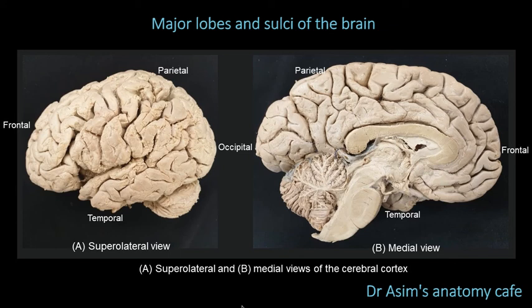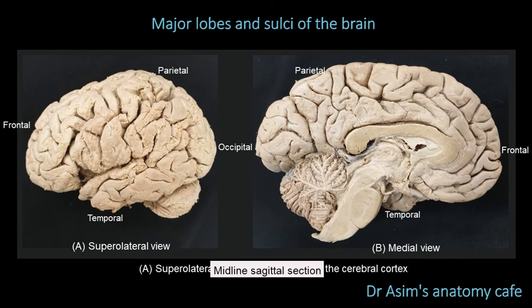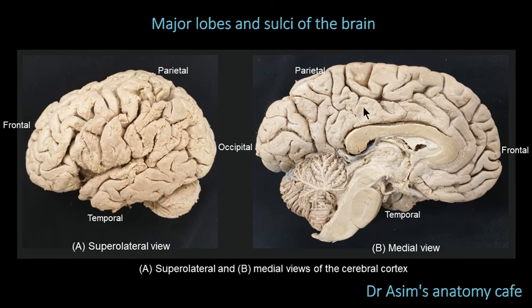Let's first orientate the pictures of the prosections we're looking at. Whenever you look at any prosection, your first job is to orientate it. Looking over here, we're looking at the supralateral or lateral view of the cerebral cortex. On the right, this is a midline sagittal section taken through the center of the brain, so you're looking at half the brain — the medial or inside surface of the cerebral cortex.